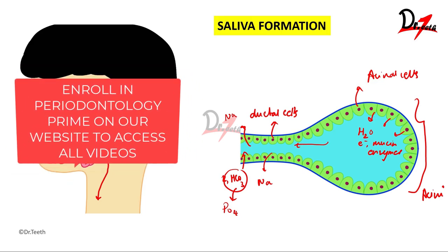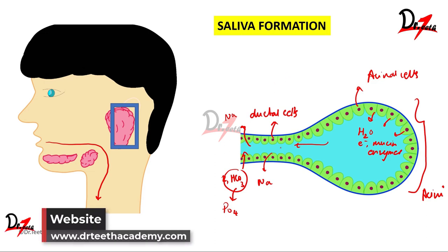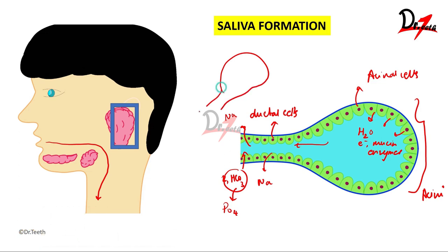There are many acini present, and all these small collecting ducts ultimately combine to form the larger collecting duct, which eventually forms the main duct that drains into the oral cavity.